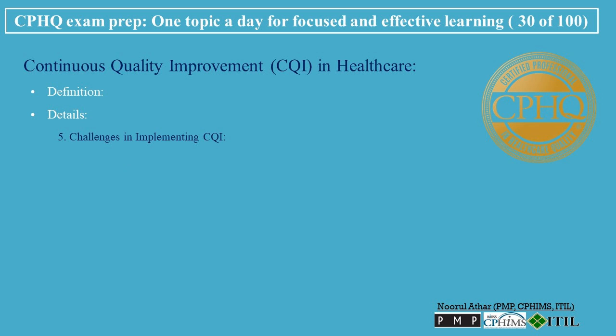Challenges in Implementing CQI: Resource Allocation involves balancing the need for continuous improvement with available resources, including time and funding. Resistance to Change means overcoming resistance among staff who are accustomed to established routines and practices. Measurement and Analysis — effectively measuring improvements and attributing them directly to specific changes can be complex.